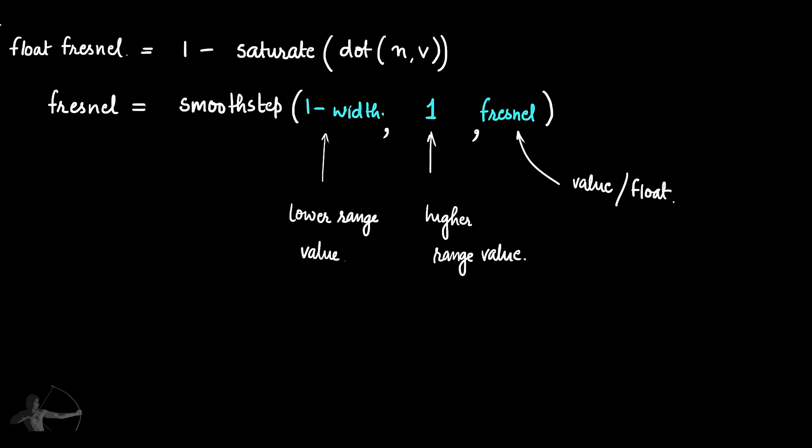So these are the two lines we will use in our shader, based on which we will add the amount of reflection onto the surface. That is it for this chapter. In the next chapter, we will start writing our Fresnel shader and will start using these lines that we understood in this chapter. Thank you so much for listening.